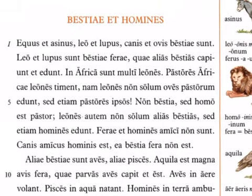Let's look back to the beginning of our story. Bestiae et homines: equus et asinus, leo et lupus, canes et ovis, bestiae sunt. The horse, equus, and the donkey, asinus; the lion, leo, and the wolf, lupus; the dog, canes, and the sheep, ovis — are animals, are creatures.